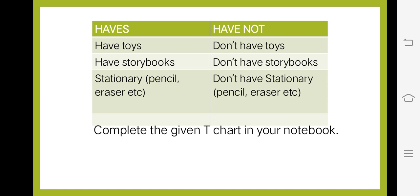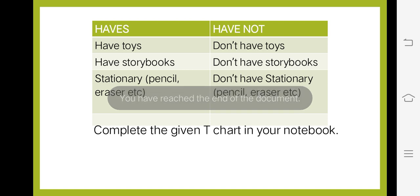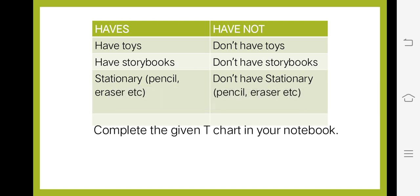These are the examples given to you. The rest you are going to complete by yourself — write at least six to seven points. Complete the T-chart in your notebook. Write down the date and day, then start your work. Watch the video carefully and then start your work. If you have any confusion, you can ask me.